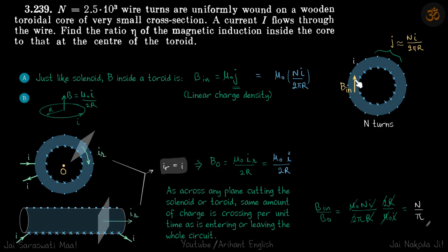So B inside divided by B at the center of the toroid. First thing we know that just like a solenoid, inside a toroid field is μ₀j where j is linear current density.